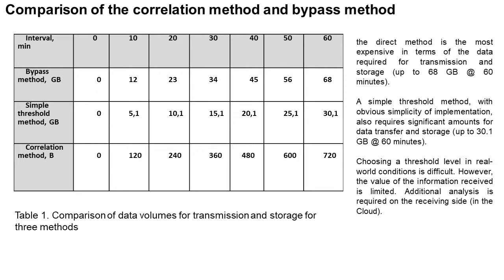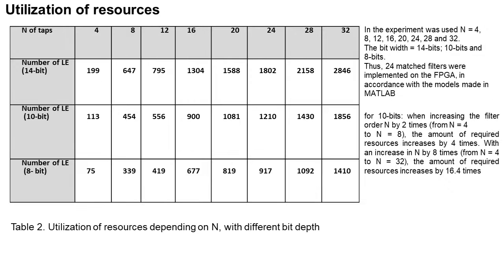We analyzed three methods: direct, simple threshold, and correlation method. Our results are presented in Table 1. The direct method is the most expensive in terms of data required for transmission and storage — up to 68 GB per hour. The simple threshold method yielded up to 30 GB per hour, though choosing a threshold level in real-world conditions is difficult and the value of information received is limited, requiring additional analysis on the receiving side in the cloud. We also researched utilization of hardware resources with an FPGA-based implementation; results are presented in Table 2 for 8, 10, and 14 bits.